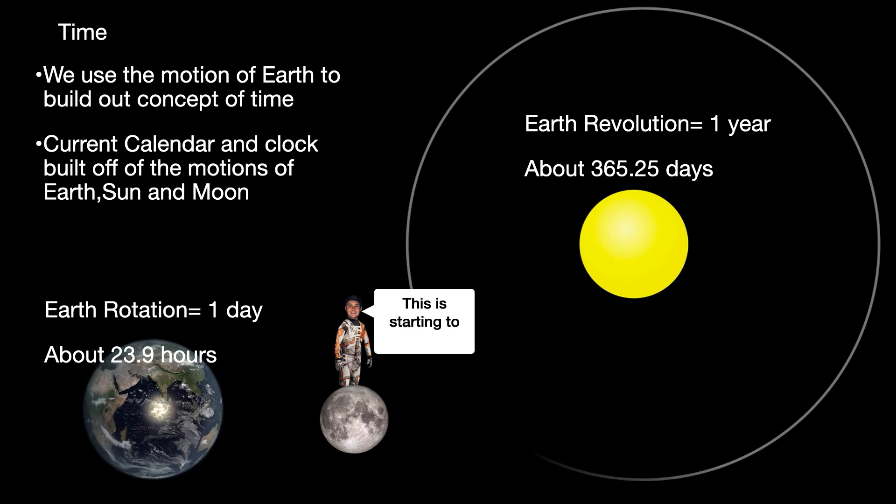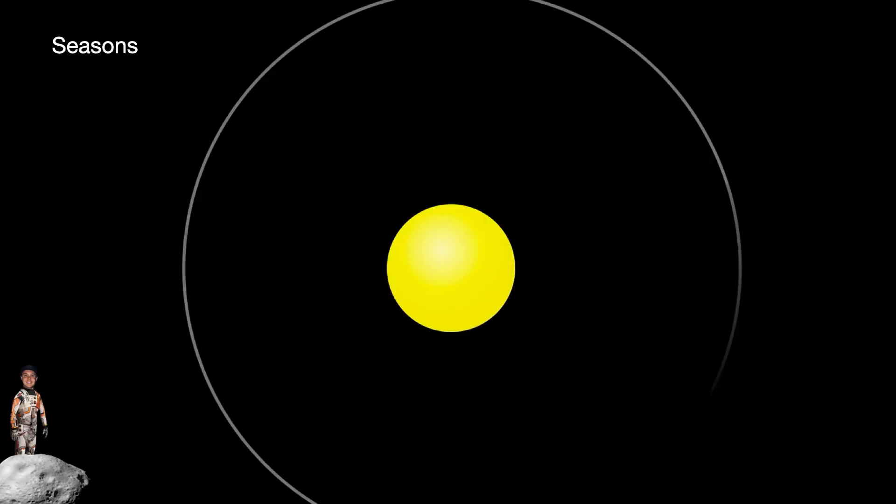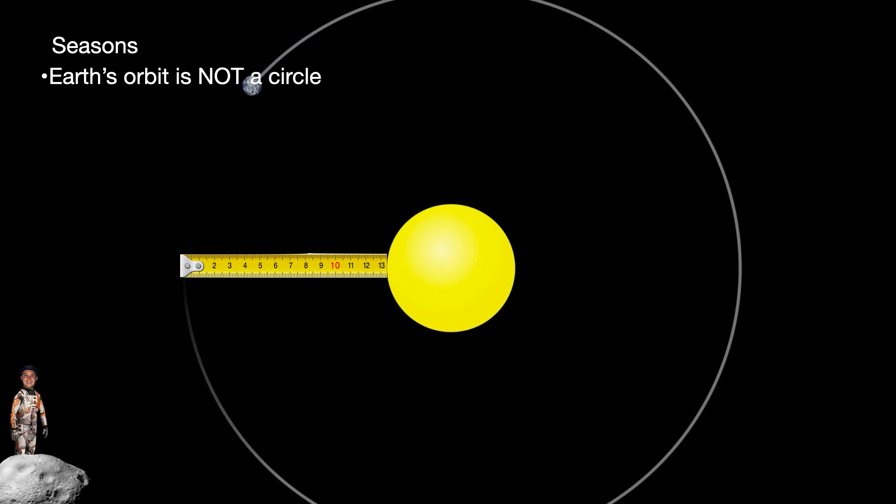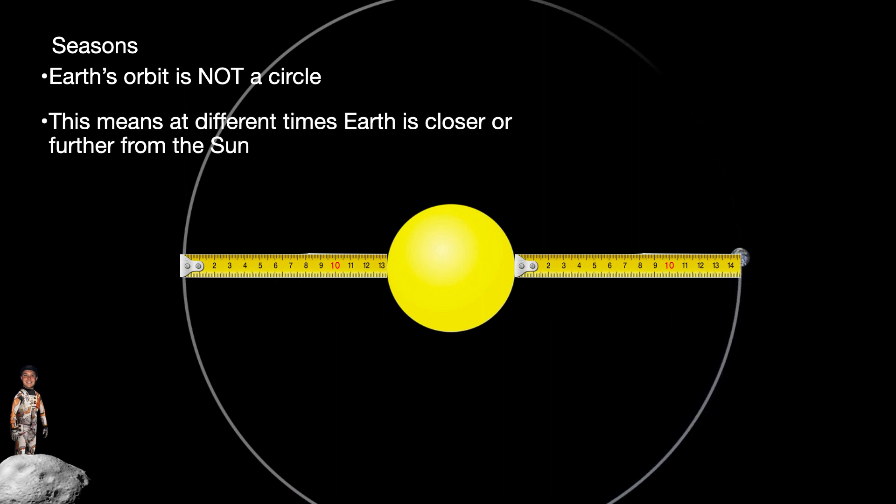So another way that Earth's motion will affect us daily will be in the form of seasons. Now you have to remember that Earth's orbit is not a perfect circle. This means that at different points in the year, you will be closer or farther away from the sun, and that's what the tape measure is showing here. So it turns out that we are closer to the sun on one end of the orbit at about 147 million kilometers from the sun. And on the further end, we will be about 152.1 million kilometers from the sun for a difference of about 5 million kilometers. No big deal.